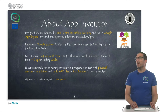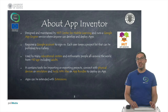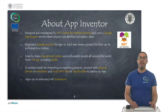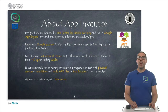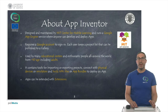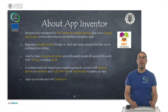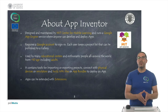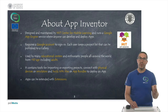APP Inventor has been designed and maintained by the MIT Center for Mobile Learning and it runs on Google App Engine, which is used to allow everyone to develop and deploy apps running on Android and lately on iOS as well. It requires a Google account in order to log in, and once logged in you have a project list that you can even publish to a gallery. It's used by many educational centers and ICT courses around the world, as well as by enthusiasts, and it's recommended for ages 10 and above, though it's used by adults as well.